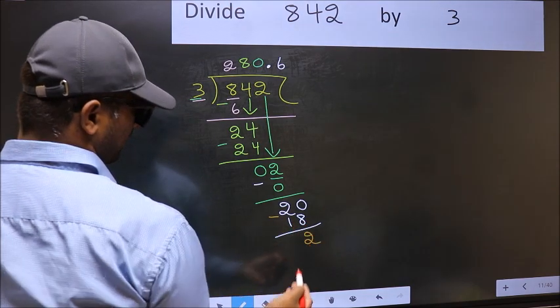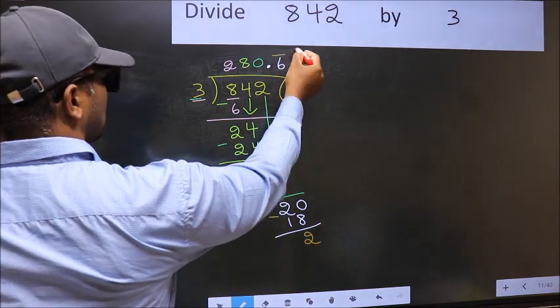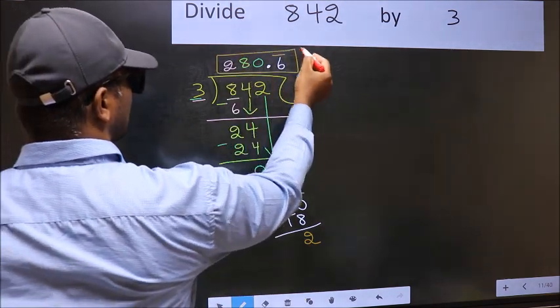We got 2 again. That means we get bar on this number. So this is our quotient.